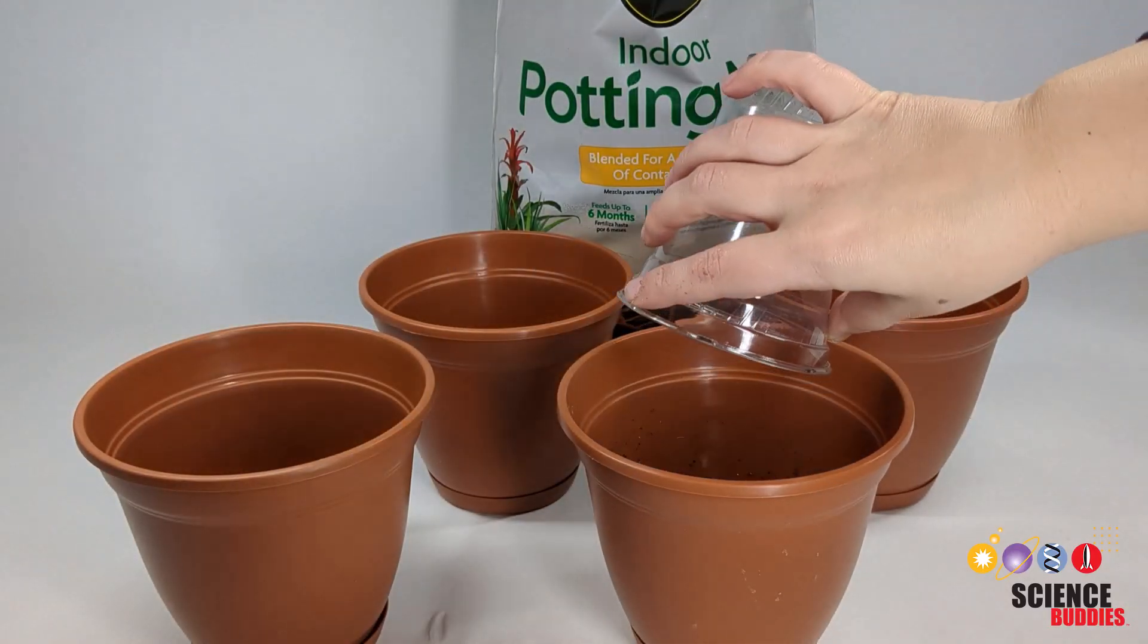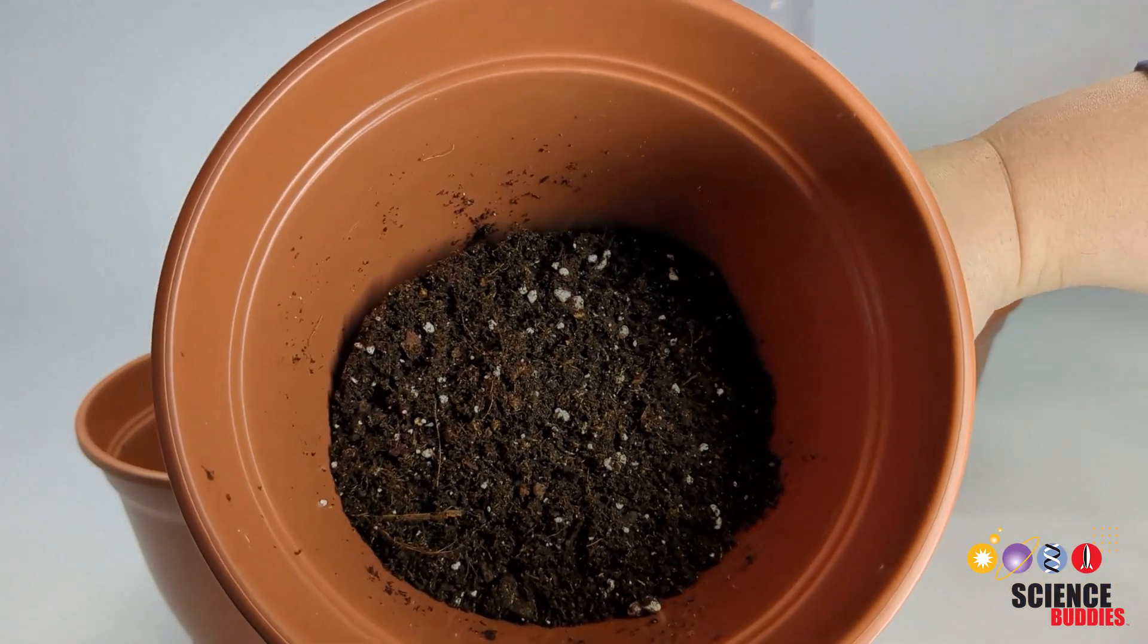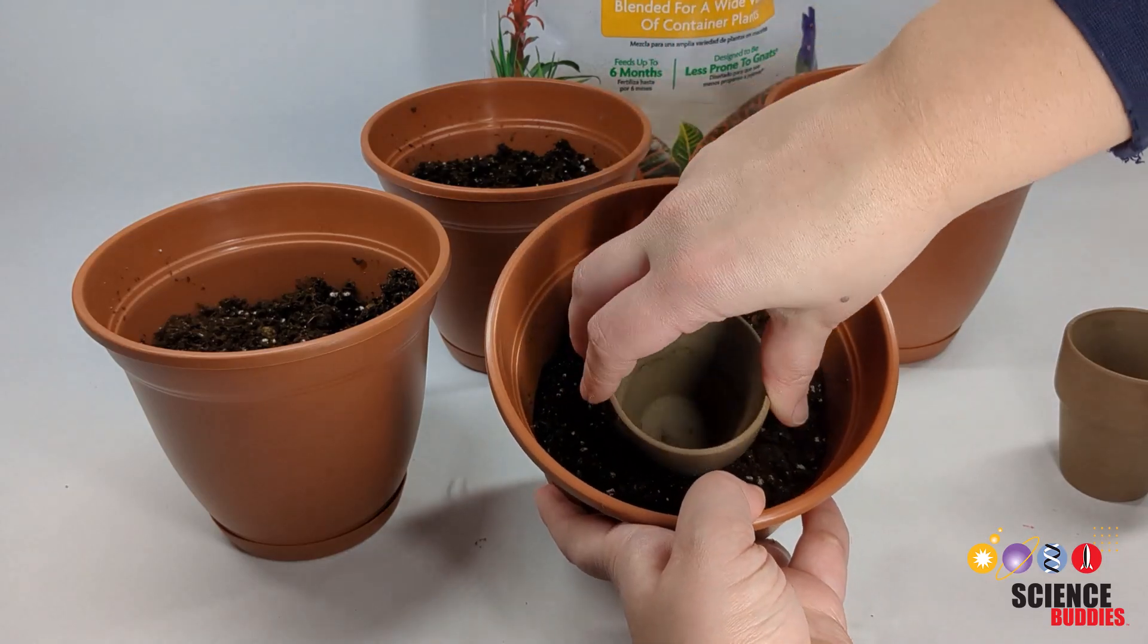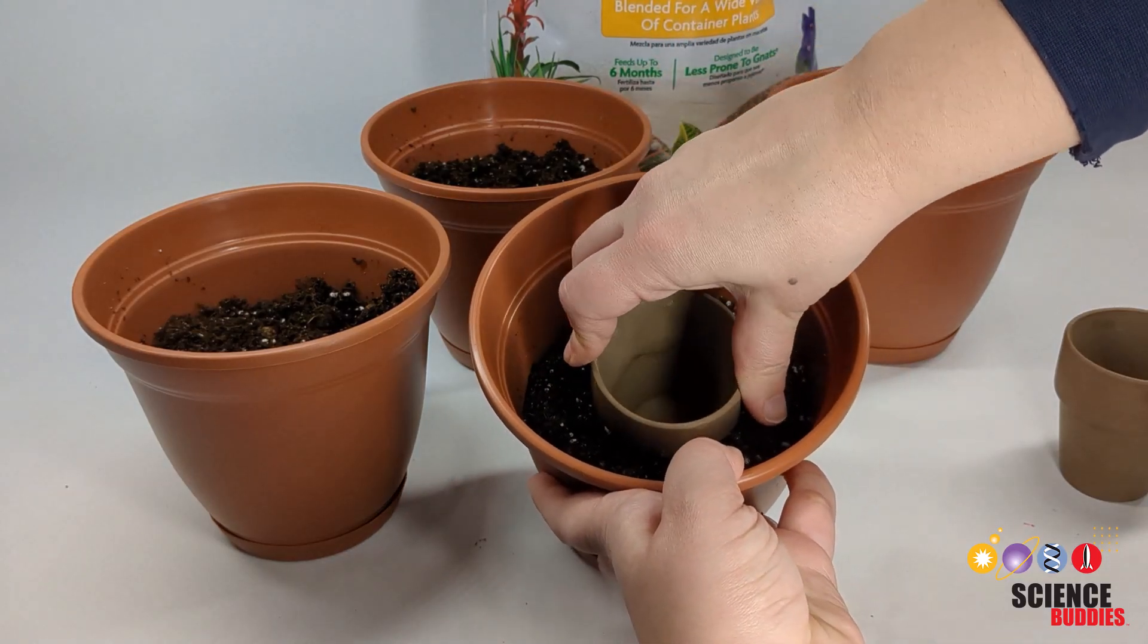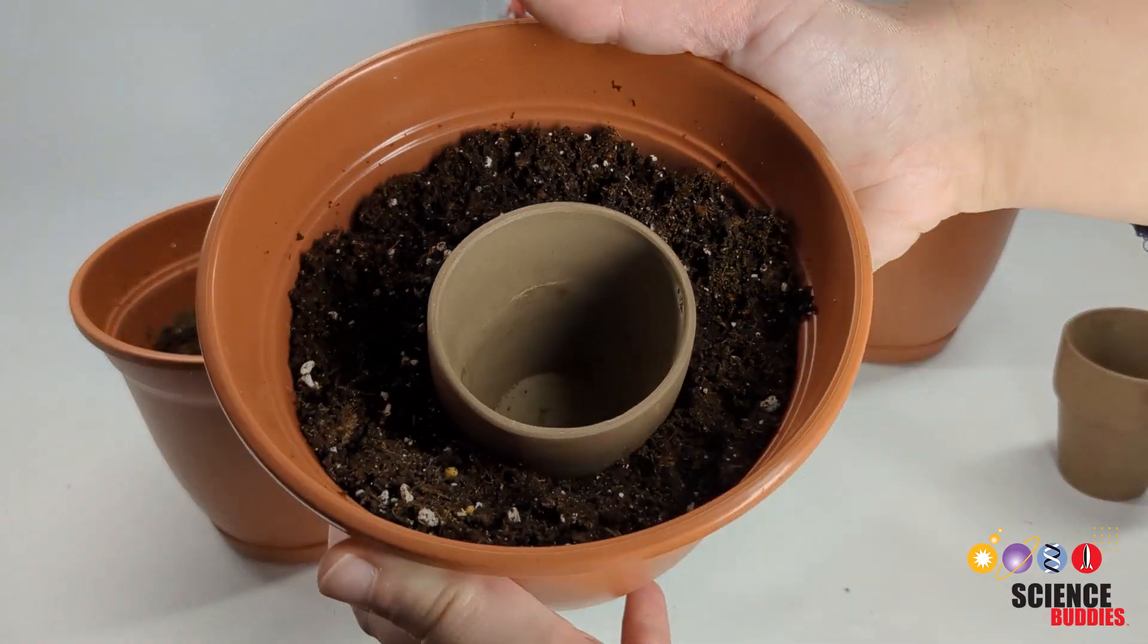To set up your planters for each irrigation system, fill each pot halfway with soil. Then, to set up your clay pot or oya irrigation system, pre-wet your clay pot first, then insert it into the soil. Fill the area around the oya with soil.